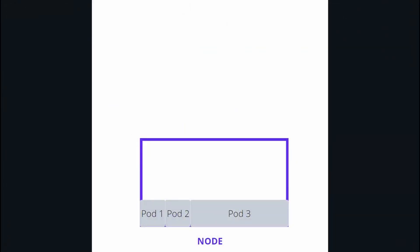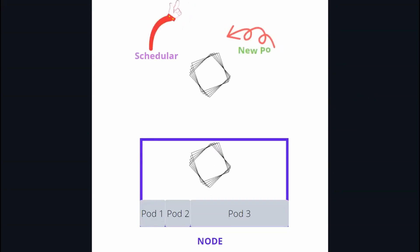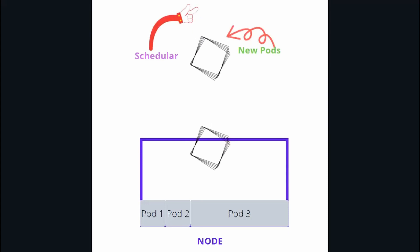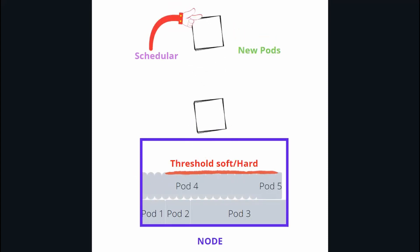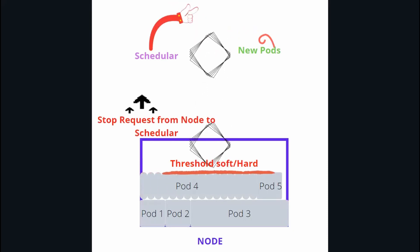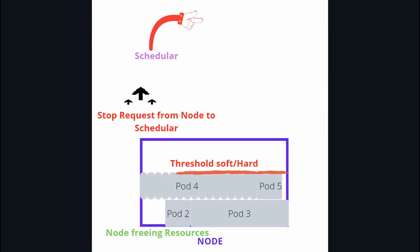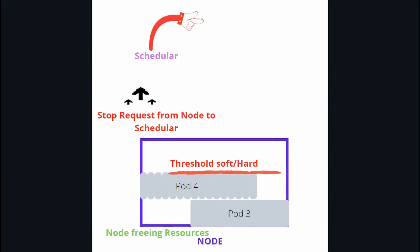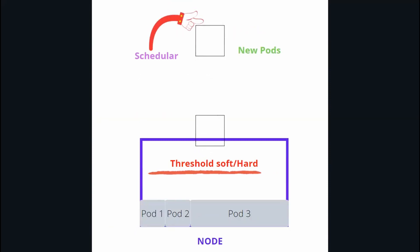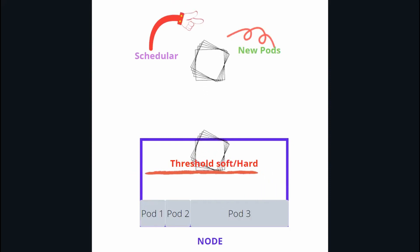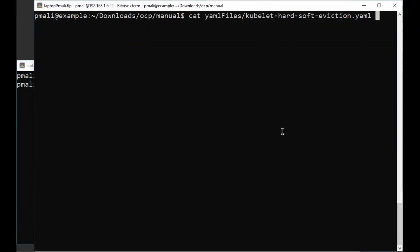Let's understand eviction using a diagram. The node has some workload as pods are running on it. The scheduler is scheduling more pods on the node. Eventually the node reaches the threshold limit. The node then sends a signal to the scheduler to stop scheduling more pods. In the meantime, the node tries to reclaim resources by deleting pods — pod 1, pod 2, and pod 5 are deleted. As resources become available, the node stops its reclaim request, the scheduler starts scheduling pods again, and this cycle continues until the node hits the threshold again.